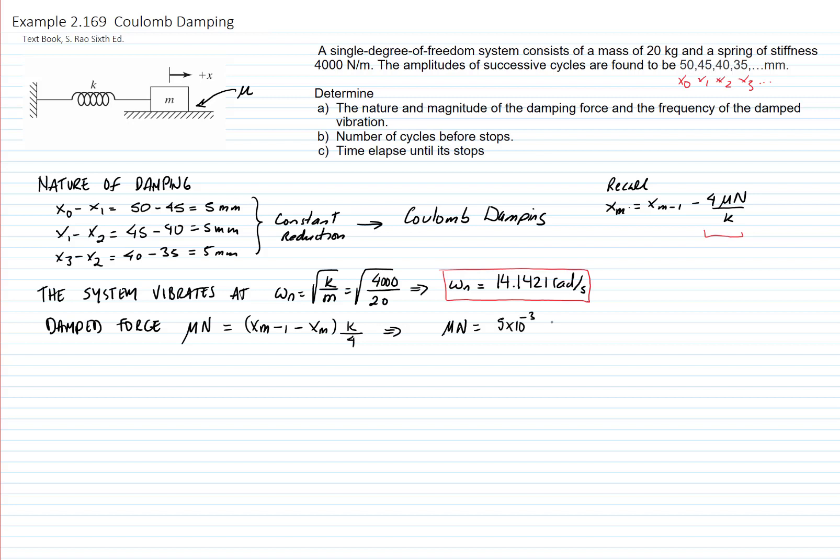We can substitute the values and we get that this is 5 millimeters, which is 5 times 10 to the negative 3 meters, times 4000, which is the constant of the spring, divided by 4. That gives me the friction force, which is 5 newtons.